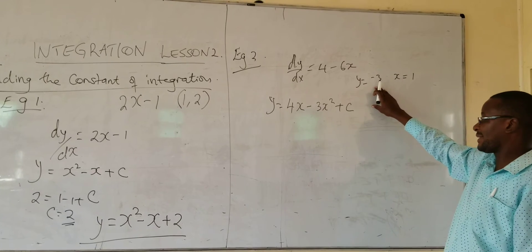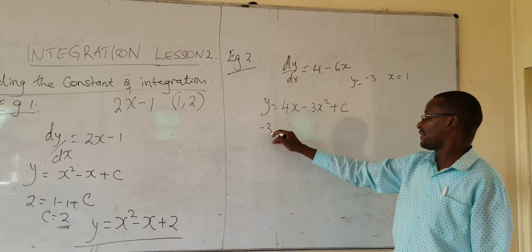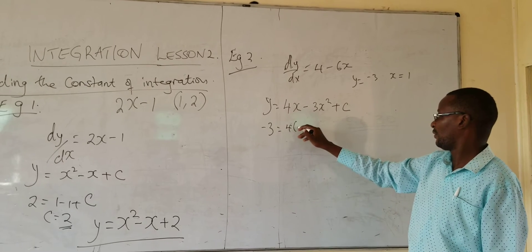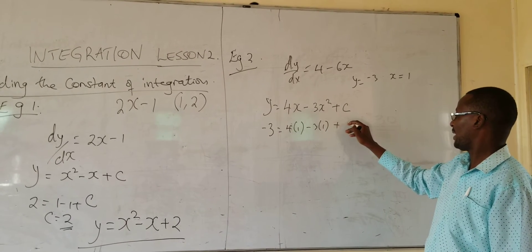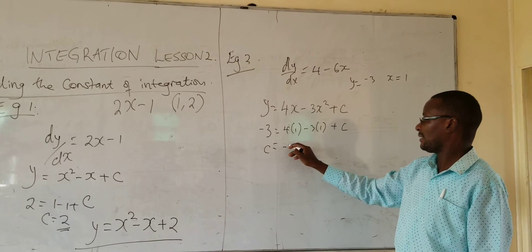Then you substitute when y is negative 3, x is 1. So negative 3 is equal to... plus C. And you will get C is negative 4.